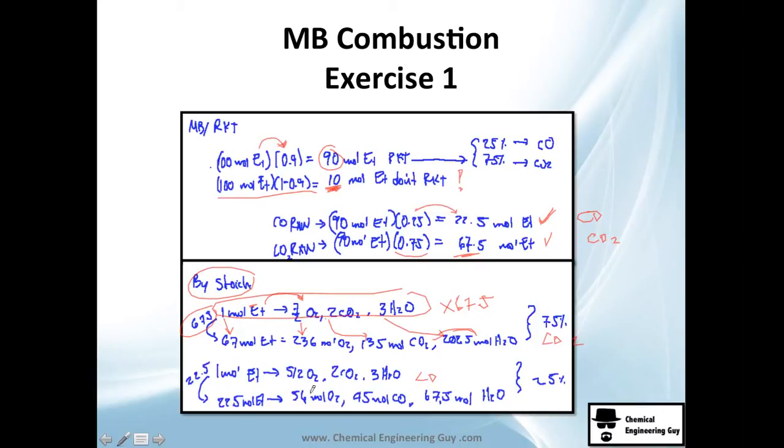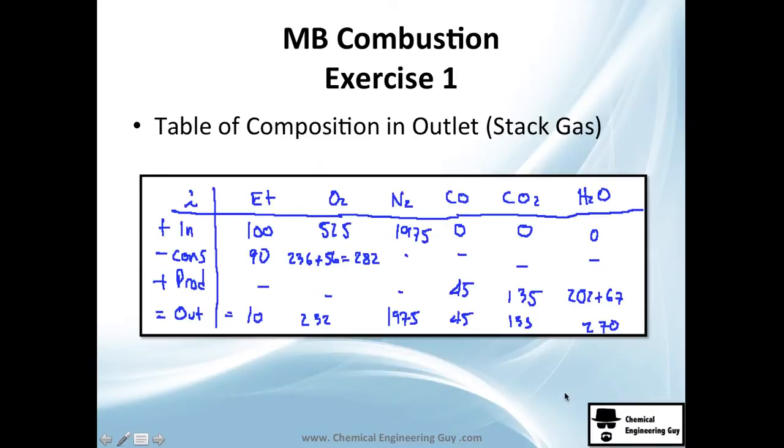We'll do the same for the CO fraction conversion, which is 1 mole of ethane times 22.5. So it's 22.5 moles, and we multiply this number times 22.5 for each product. Now we get the composition and make a table: inlet minus consumption plus production equals outlet. The inlet is 2,525 moles, which comes from the air in excess composition.